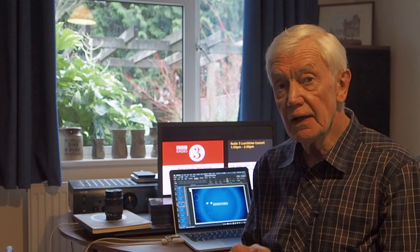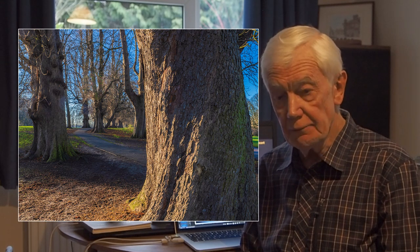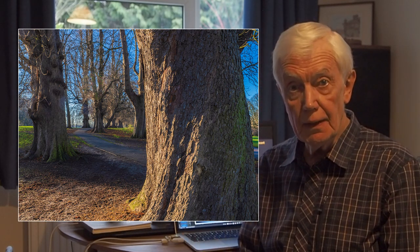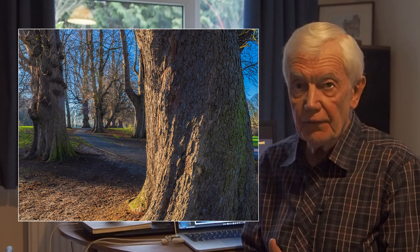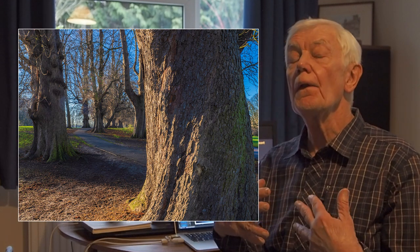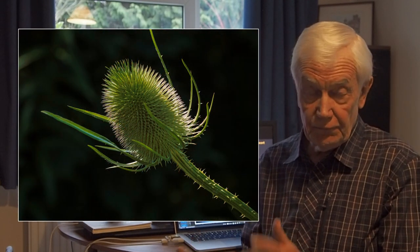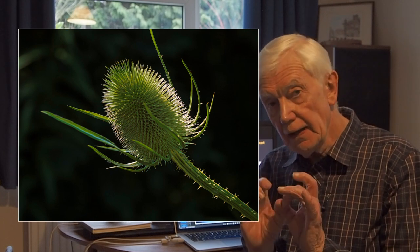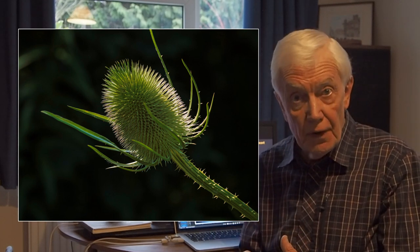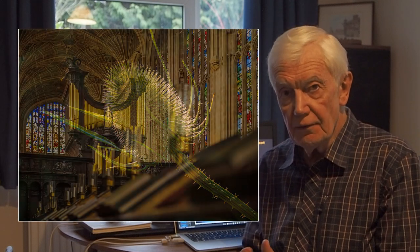A small aperture — say f/11, f/16, or f/22 — will give an extended depth of field, very useful for landscapes where you want everything to be sharp. But if you were photographing a flower or a shrub and wanted it to stand out from the background, you would use a wide aperture: f/5.6, f/4, or f/2.8. That keeps the shrub sharp but throws the background out of focus. You can be quite creative with a shallow depth of field.